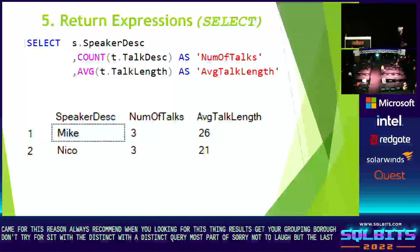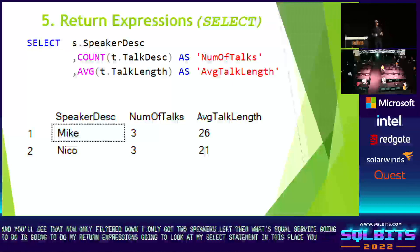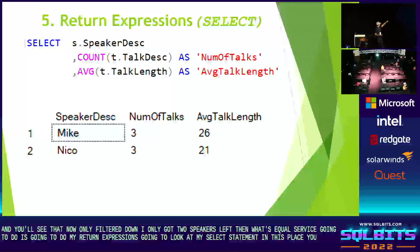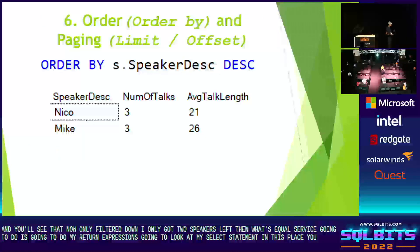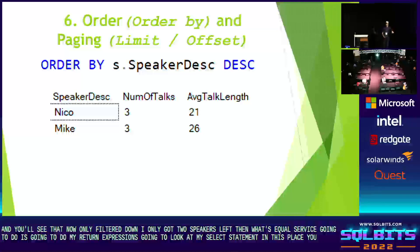Then SQL Server does the return expression — it looks at your SELECT statement, deciding what to print out as a result set and what functions to apply to columns. You'll see aggregate functions here, and I've aliased them to give columns meaningful names — please always do that as a good scripting habit. The very last step is paging and ORDER BY, which gives the presentation of the result set and, if there's a LIMIT clause, limits the result set size.